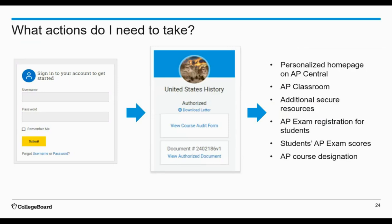Once you create a College Board account, you will be able to initiate and complete the AP course audit requirement. Once your AP course audit form is completed, this will give you access to a personalized homepage on AP Central, access to AP Classroom, additional secure resources, and AP exam registration for your students. Once the AP course audit is fully completed, you will also have access to your students' AP exam scores over the summer after they take their exam, and the AP course designation — approval to call the course AP.